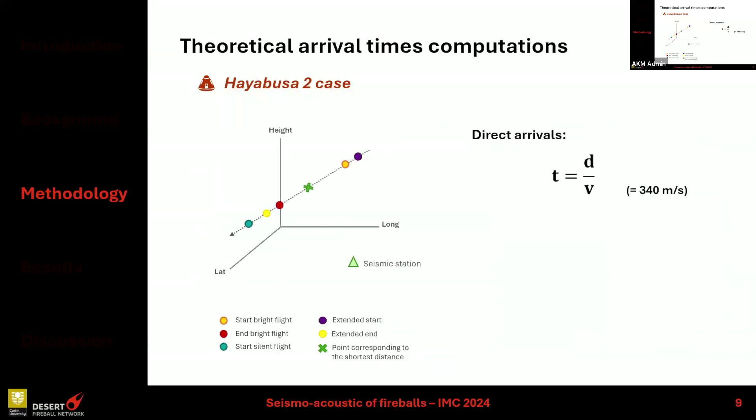After that, I computed theoretical arrival times of the shock wave originating from different points of interest along the fireball trajectory — the start, the end, and I also extended the start and end three kilometers into the ground to have the extended points. I computed the shortest distance between the fireball trajectory and my seismic station.